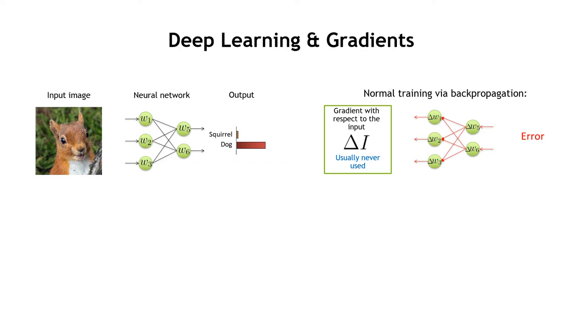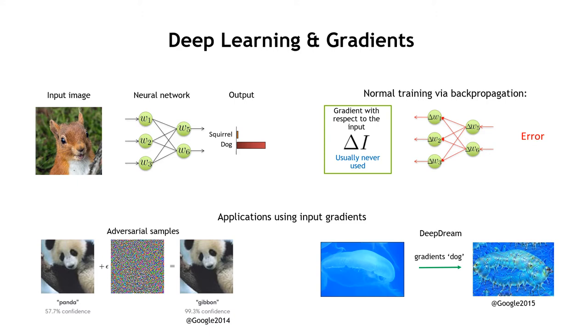As we know, deep neural networks use forward paths to make predictions and backward paths to train their weights. During this process, gradients on the input are also freely available but usually never used.